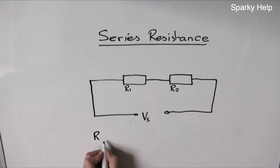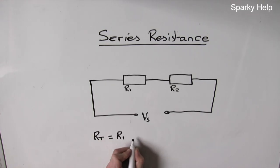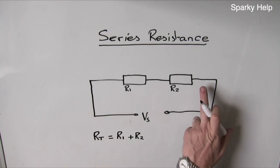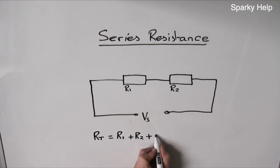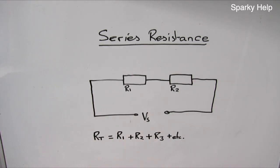Therefore, the series formula is: RT equals R1 plus R2, and if we keep adding more and more resistors in series, etc.